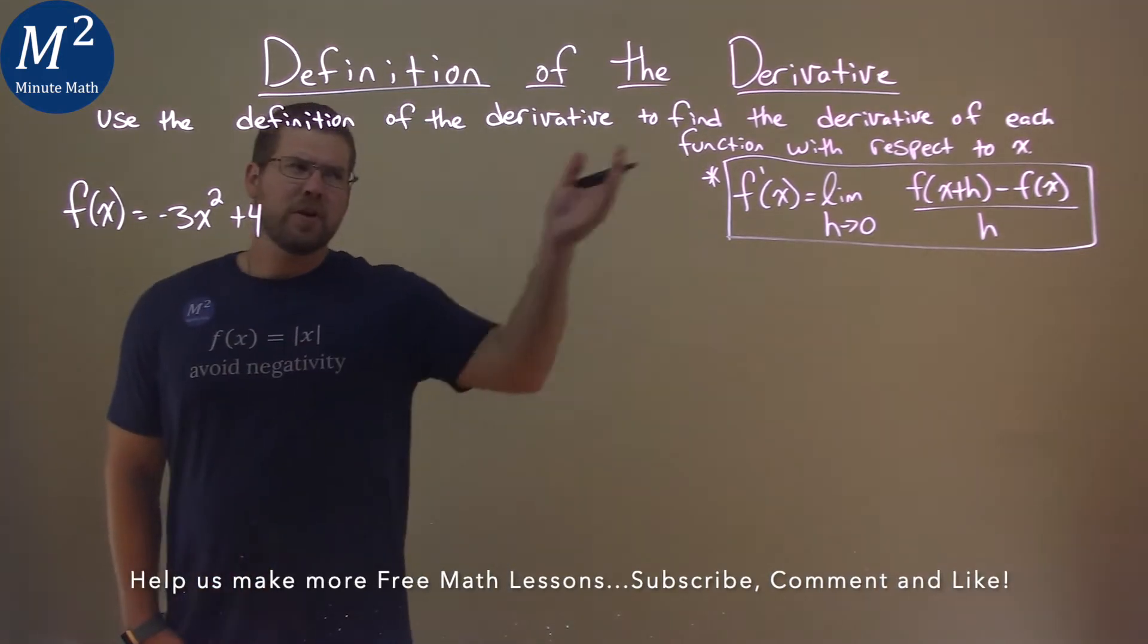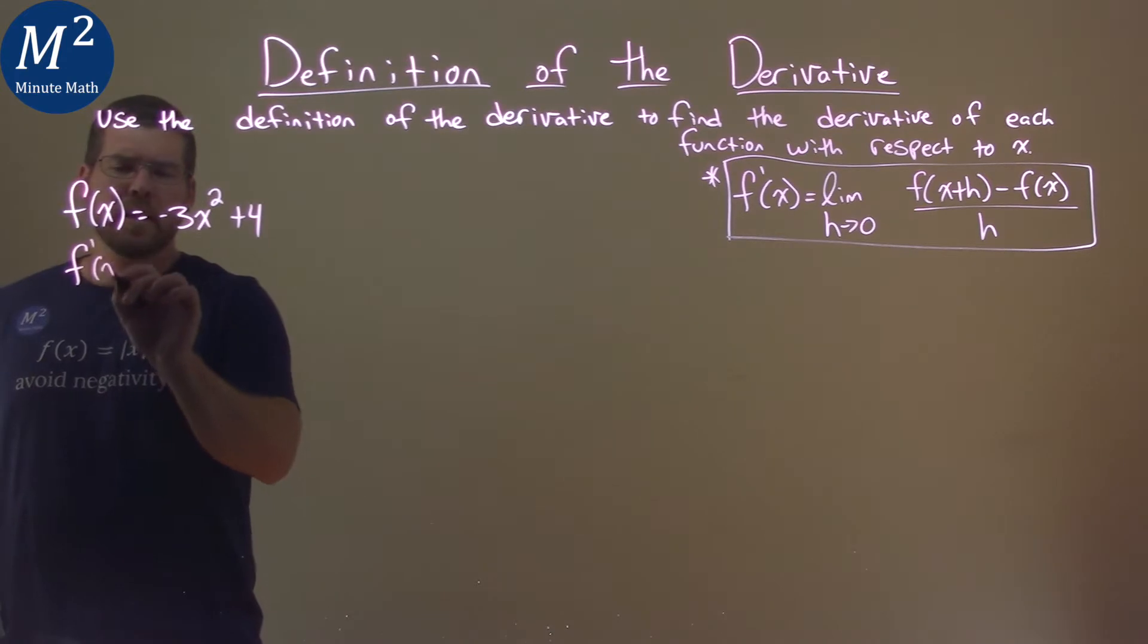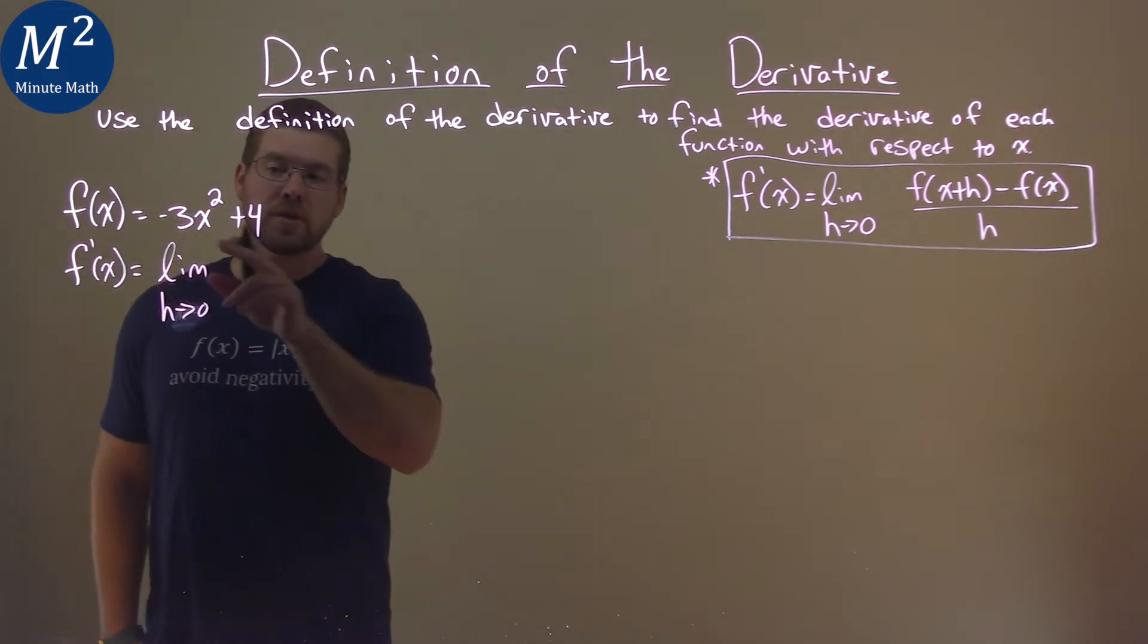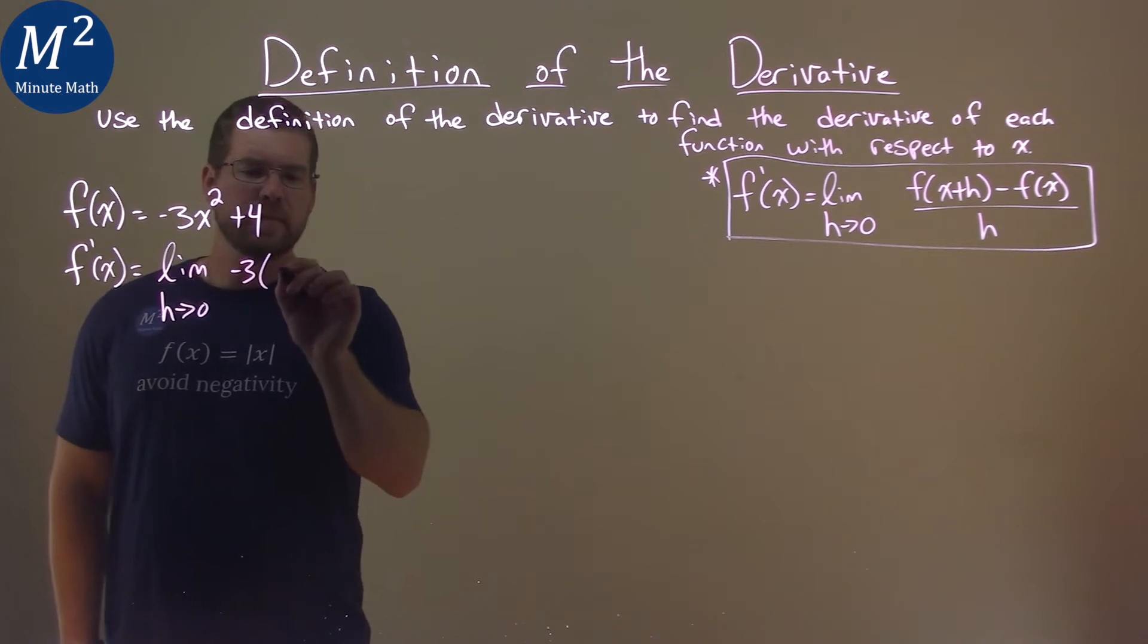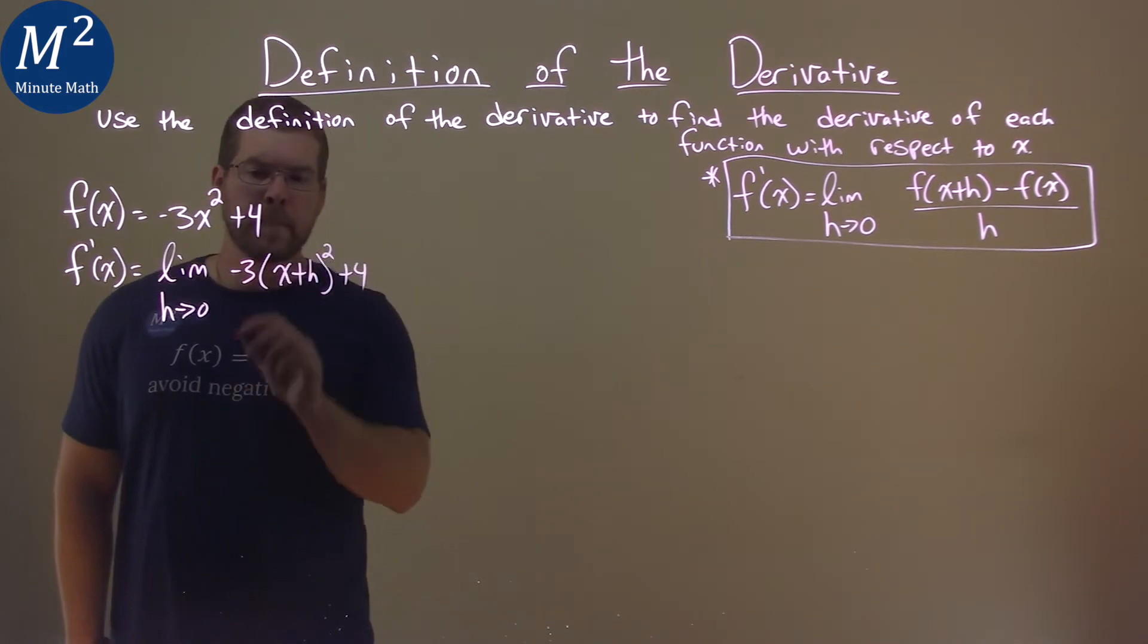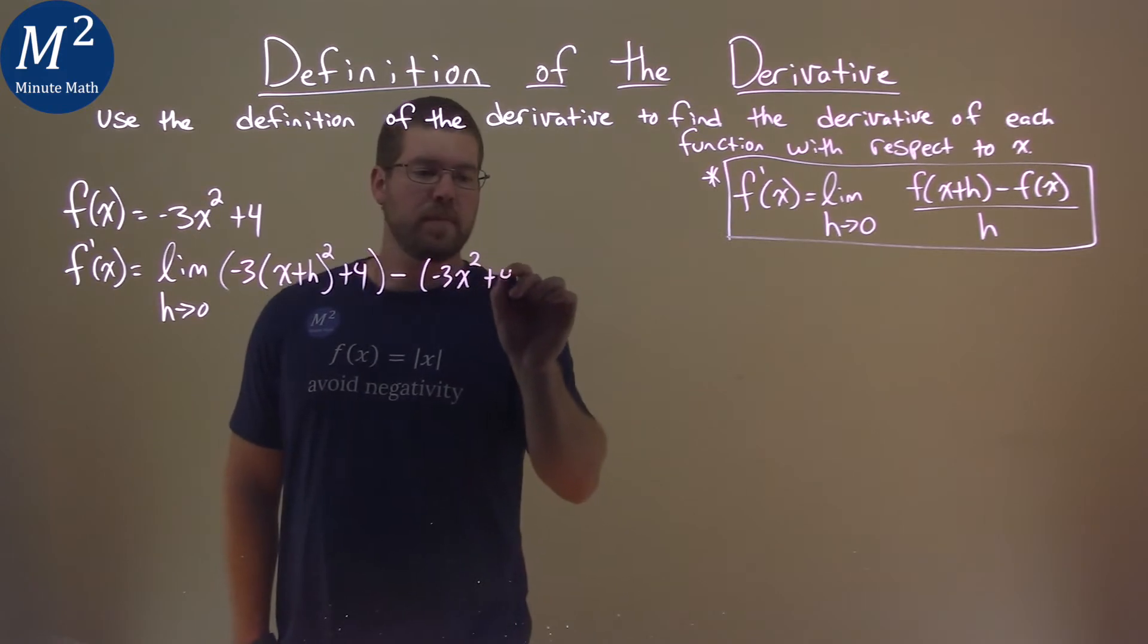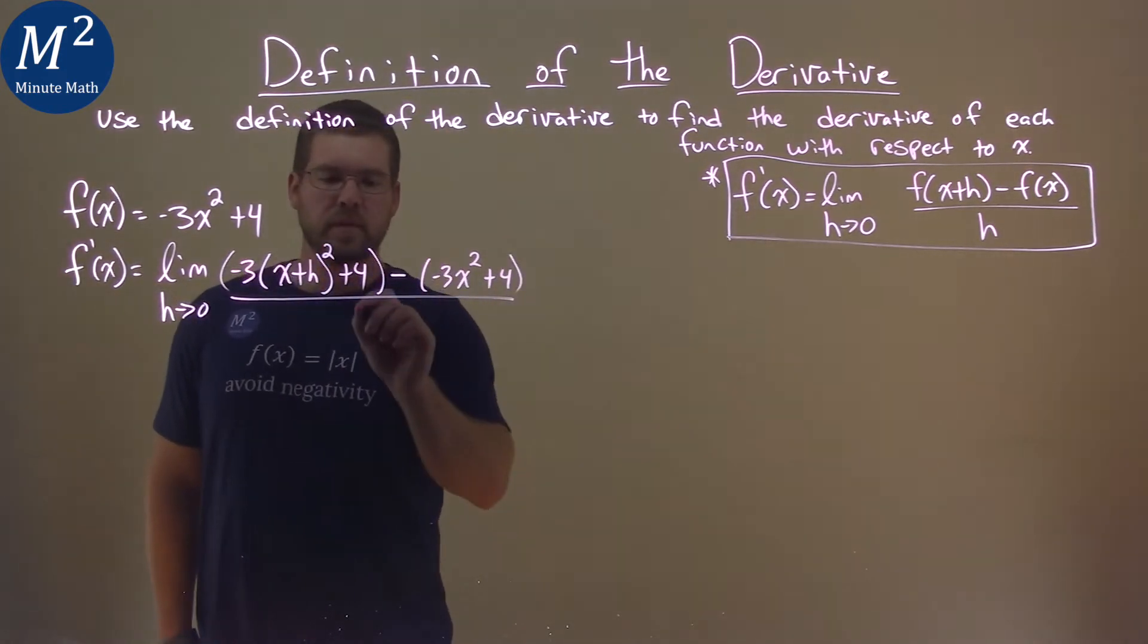So, we're using our definition right there. Our f prime of x is equal to the limit as h approaches 0 of our function, but instead of x, we have that x plus h. So, negative 3 and x plus h here squared plus 4. We're then going to subtract that by f of x, our function. Negative 3x squared plus 4, right there, all over just our h value.